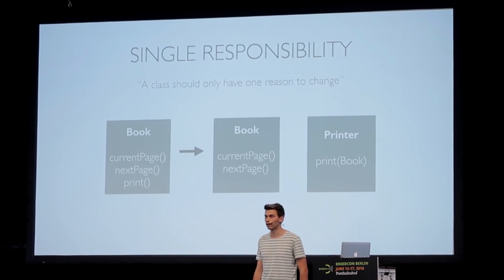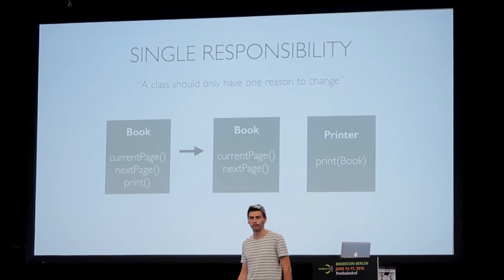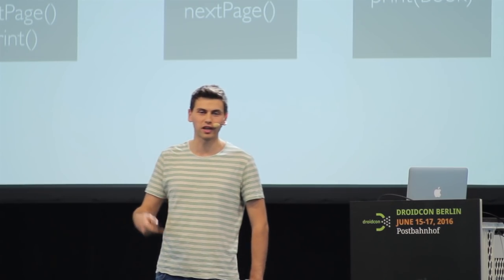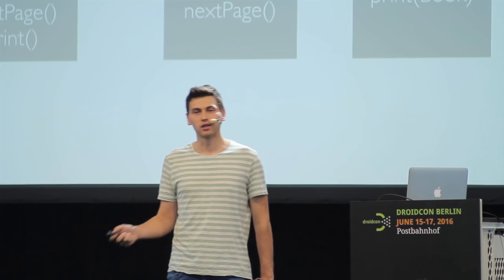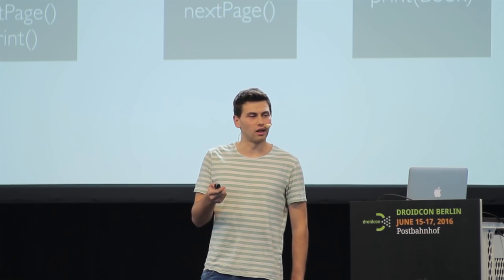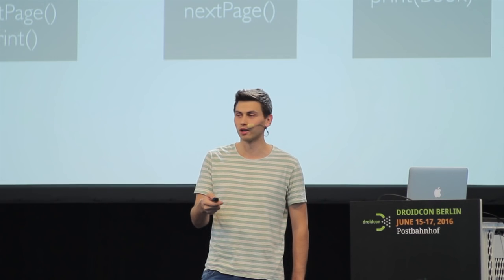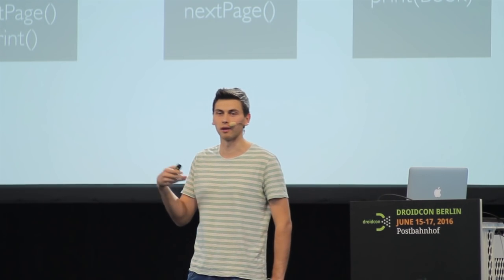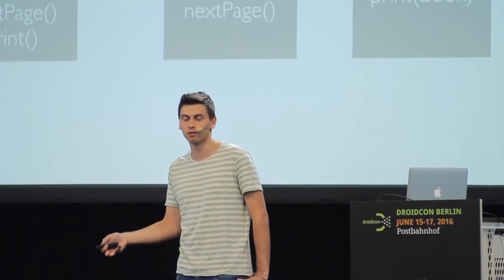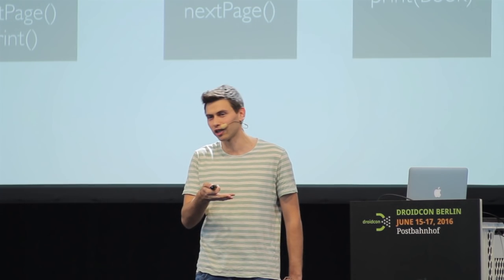We could refactor that to something like this: make a Book which is only responsible for keeping track of pages, and a Printer, and the Printer gets the Book. Now we only have to touch Book if we want to change something with pages, and if we want to change the Printer implementation we touch the Printer class.